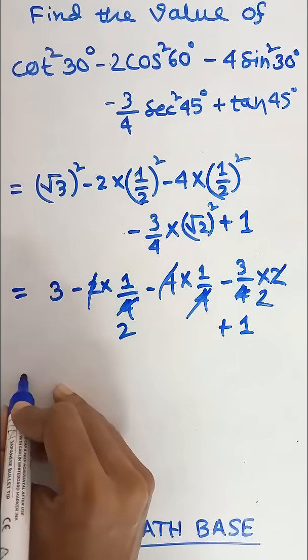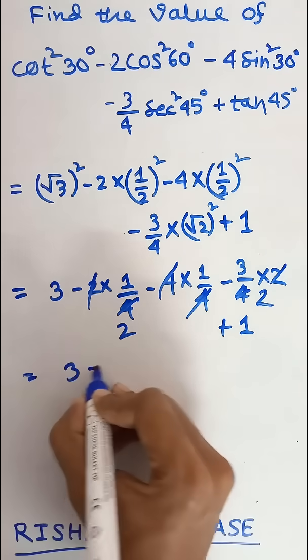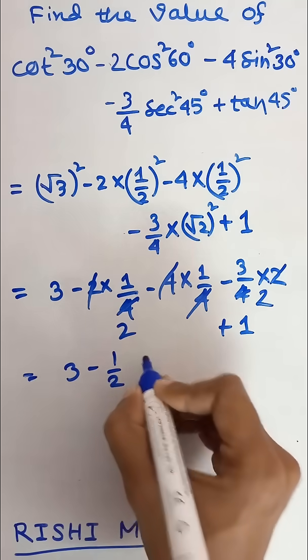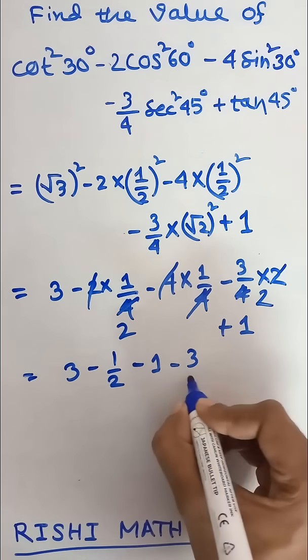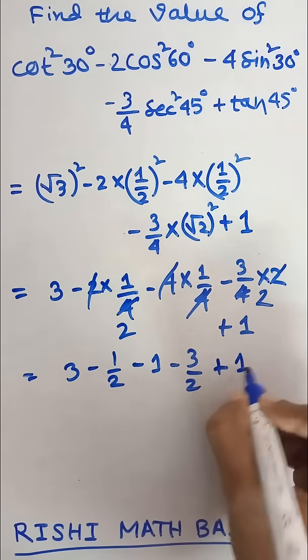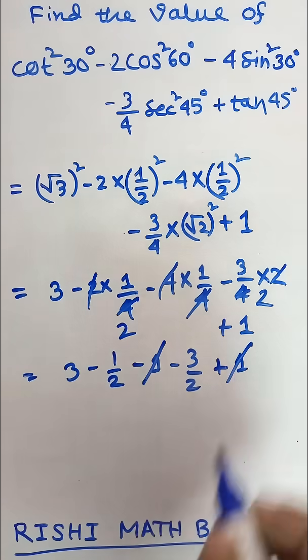So we are getting 3 minus 1 by 2 minus 1 minus 3 by 2 plus 1. Minus 1 plus 1 cancel.